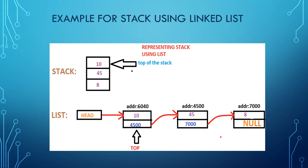Now let's see the example for stack using linked list. This is a stack with three elements: 8, 45, and 10. 10 is the top of the stack. In every linked list, head is the first node. The first node has two values: 10 and address 4500. The next node contains 45 and address 7000. The last node has 8 and null. The arrow marks indicate the links between the two nodes.